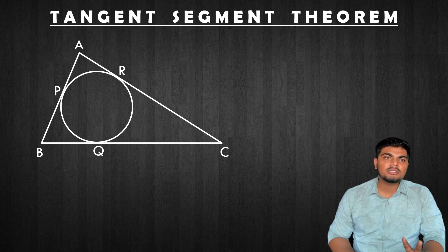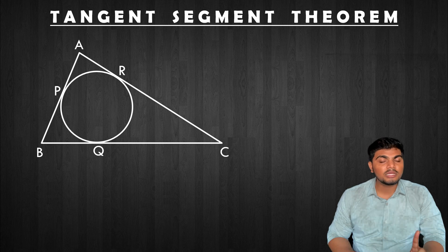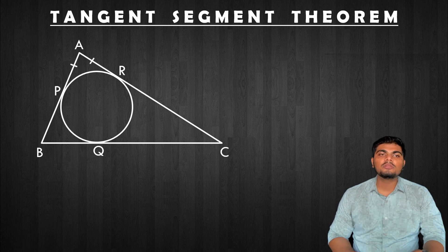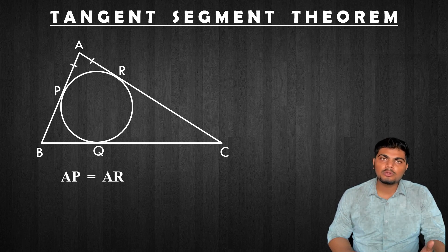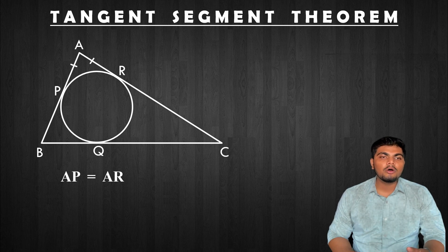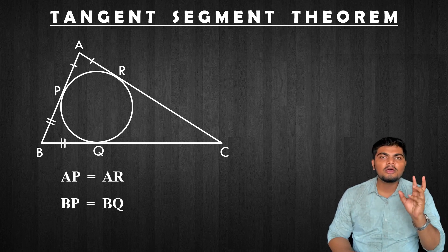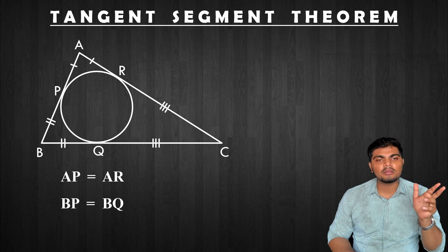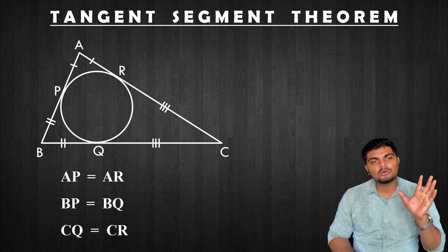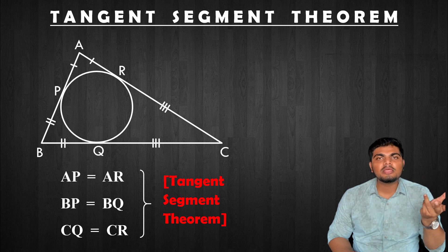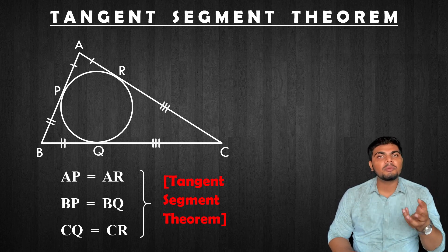You can see that AP and AR are my two points — they are congruent. Second, BP and BQ are also congruent. Then CQ and CR are also congruent. These are equal segments because of the tangent segment theorem, which we have just studied.